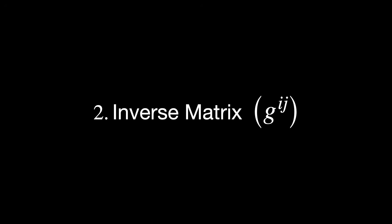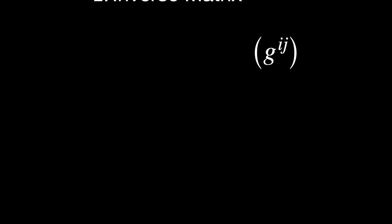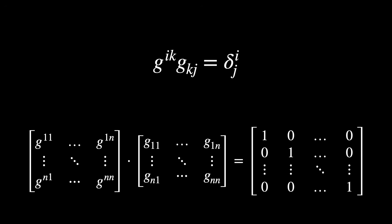Two, inverse matrix. The inverse matrix, by definition, is a matrix that, when multiplied by its original version, results in the identity matrix. So the diagonal terms are 1, and the off-diagonal entries are 0.